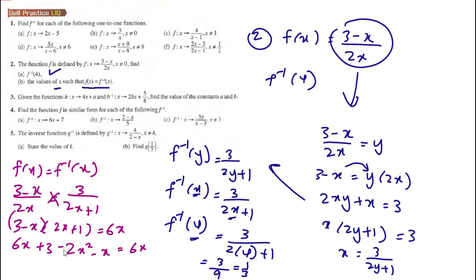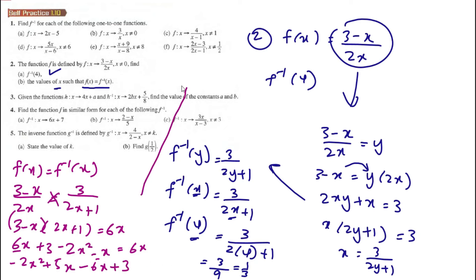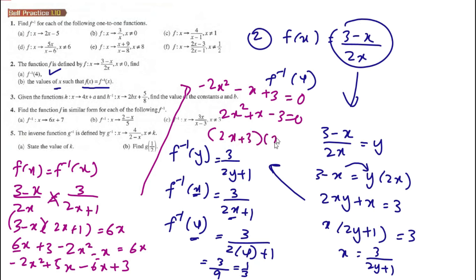Bringing everything to the left: negative 2x squared, then 6x minus x is 5x, minus 6x gives negative x, plus 3 equals 0. Multiplying through gives 2x squared plus x minus 3 equals 0, which factors as (2x plus 3)(x minus 1) equals 0, so x equals negative 3 over 2 or x equals 1.